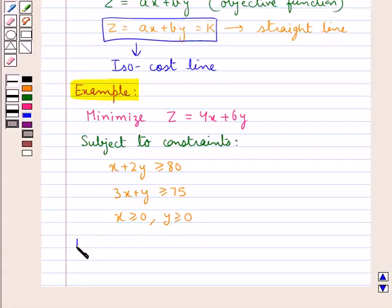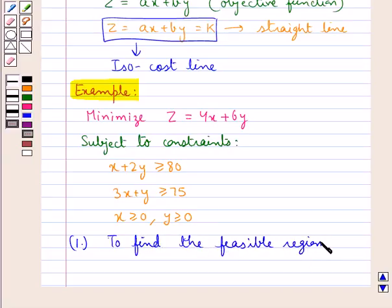Our first step involved in the isocost method to solve this problem is to find the feasible region. We know that feasible region is the common region which is determined by graphing these constraints. When we graph all these constraints we would obtain a common region to all these constraints. That common region would be the feasible region for this problem.